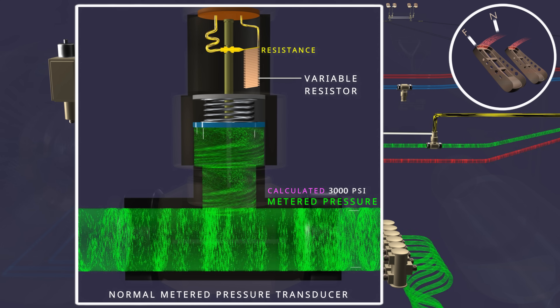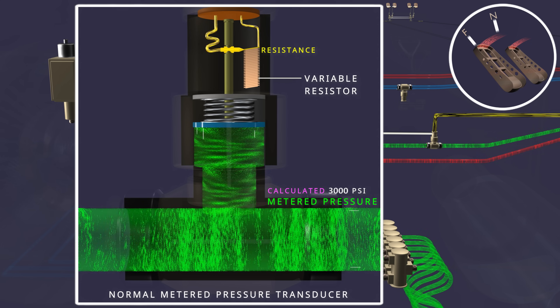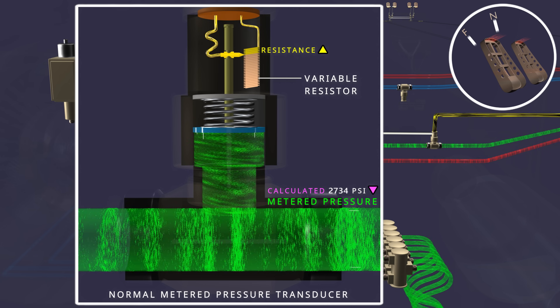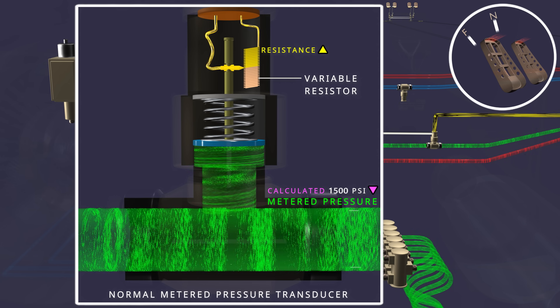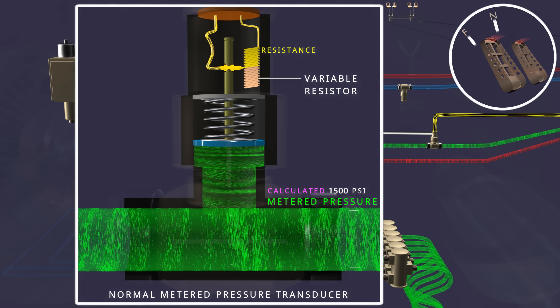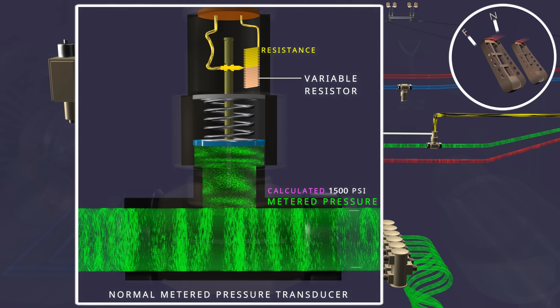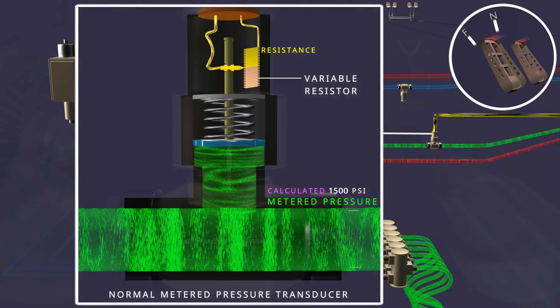Resistance is inversely proportional to the pressure — as the pressure reduces, the resistance increases. With the help of this variable resistance, the computer knows the exact metered pressure being applied.